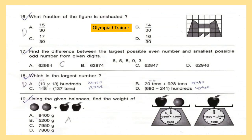Question 16: What fraction of the figure is unshaded? The figure is given here. Question 17: Find the difference between the largest possible even number and the smallest possible odd number from the given digits.